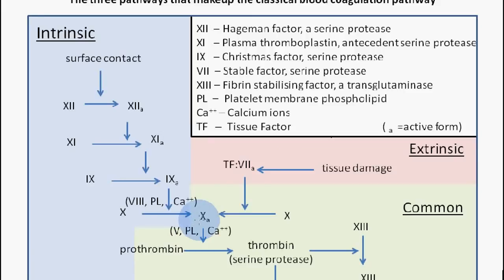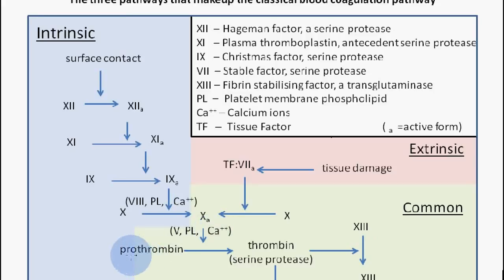Factor 10a, along with factor 5, another platelet membrane phospholipid, and calcium ions, enables the conversion of prothrombin into thrombin.